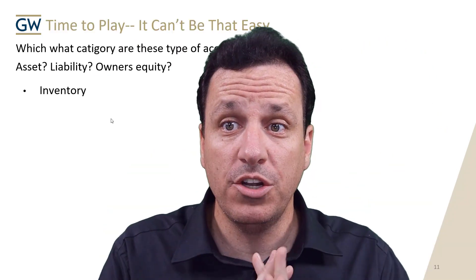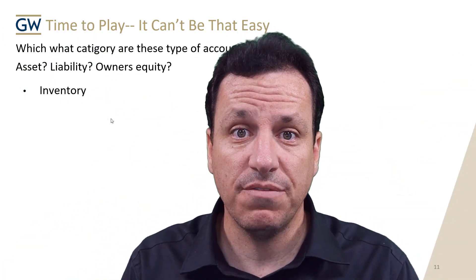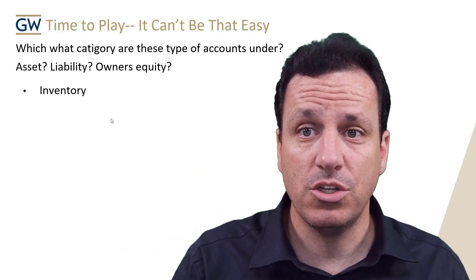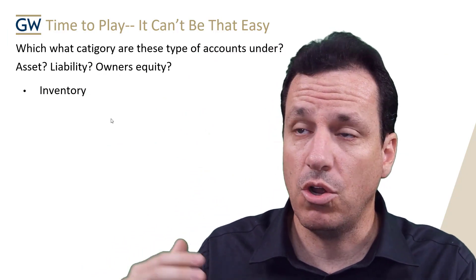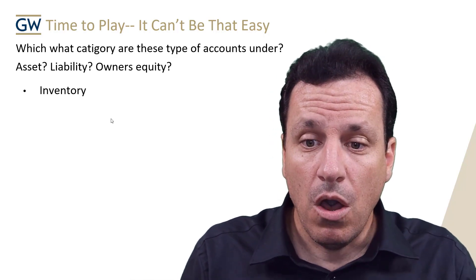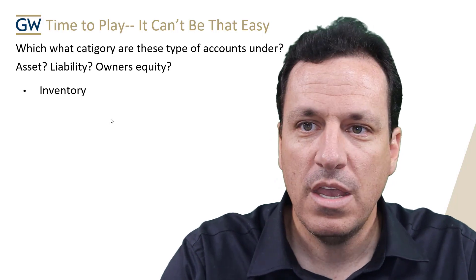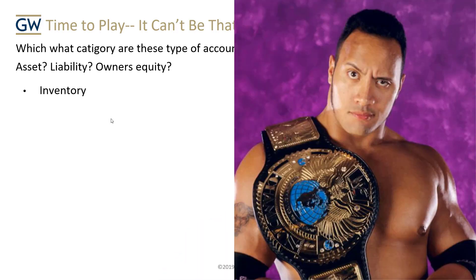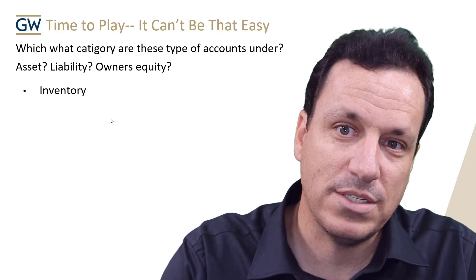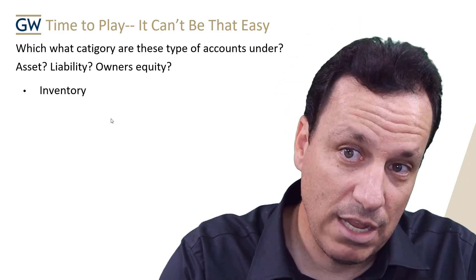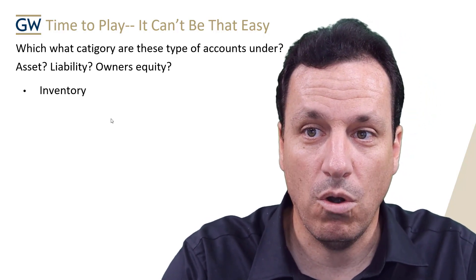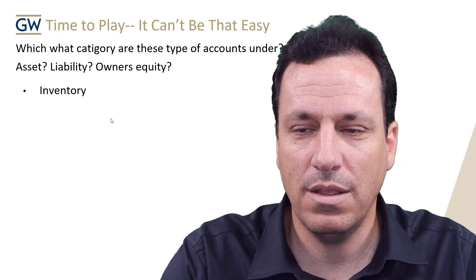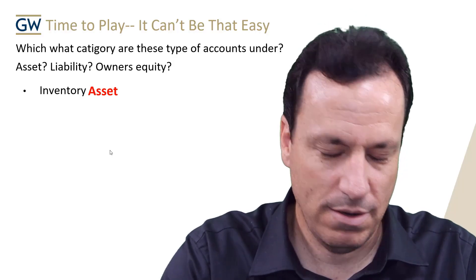Let's go through some examples to categorize different sub-accounts. We're doing the balance sheet, so your options are asset, liability, and owner's equity. Using a volunteer — Mr. The Rock — if you had an inventory account, would it be an asset, liability, or owner's equity? This would be an asset. The Rock says he'll lay the smack down on your candy assets, but asset is what it is.